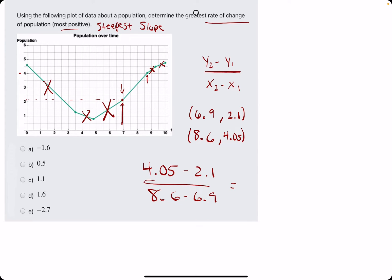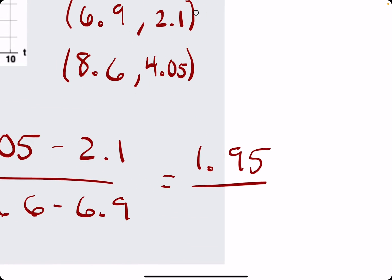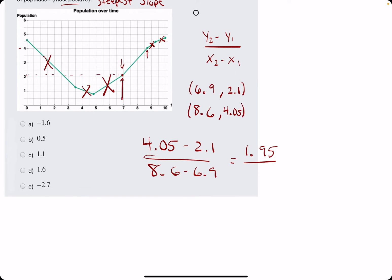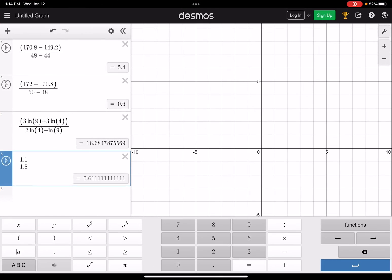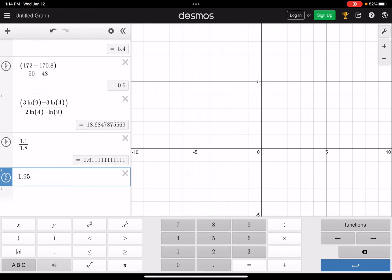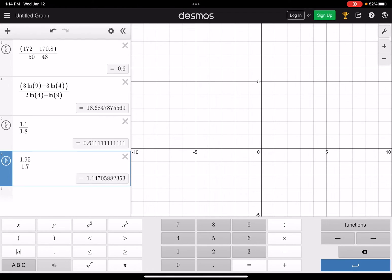4.05 minus 2.1 is very close to 2, but the way I chose these points, it's not ideal. But we get 1.95 on top. And then, on bottom, we have 8.6 minus 6.9. That should give us 1.7. All right. So now, we will divide 1.95 by 1.7, and we get approximately 1.15.